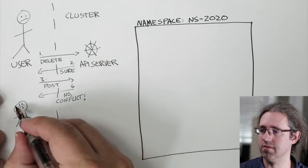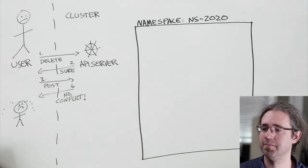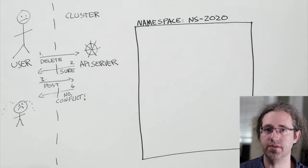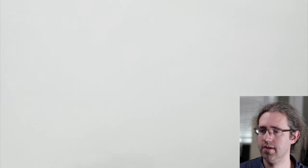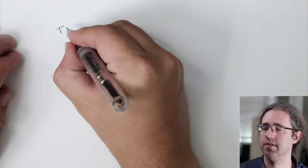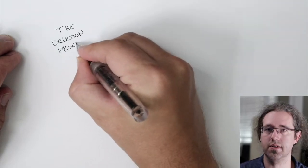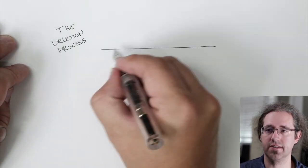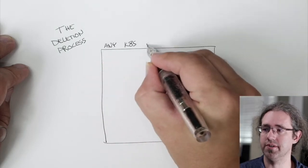This makes the user sad and angry. How could we do this to the user? Let's talk a little bit about how resources in Kubernetes are deleted. All objects in Kubernetes are deleted the same way. So although we're talking about a namespace right now, there's some background information about deletion that might be useful. As with much of what I'm saying, this is a simplification.